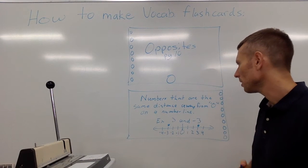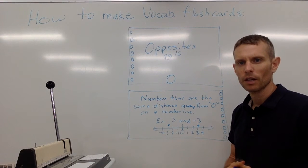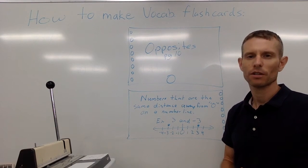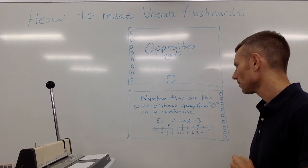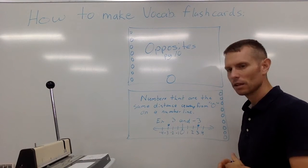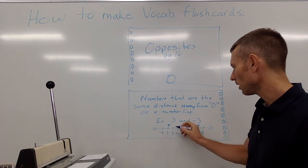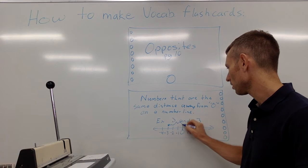numbers that are the same distance away from zero on a number line. Okay, there are other ways probably to define the term opposites, but this one is a good one I think. And so I gave an example: three and negative three. And then I drew a number line and I tried to show how they were equal distance from